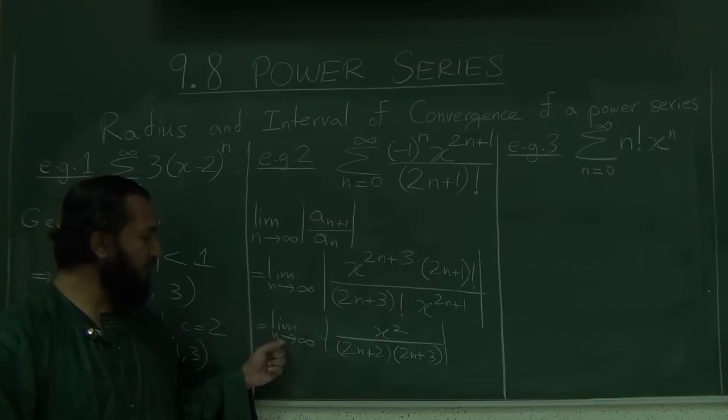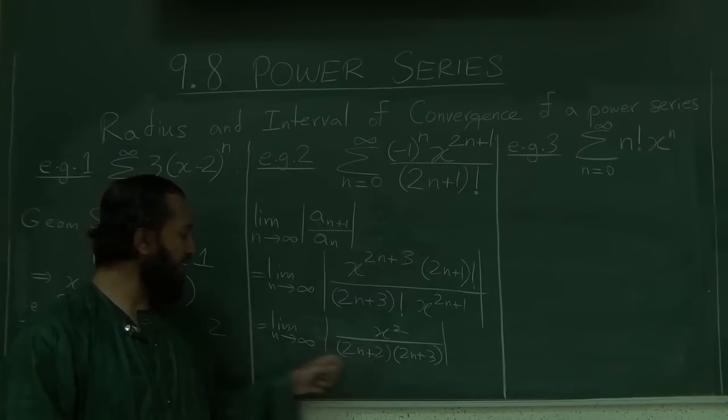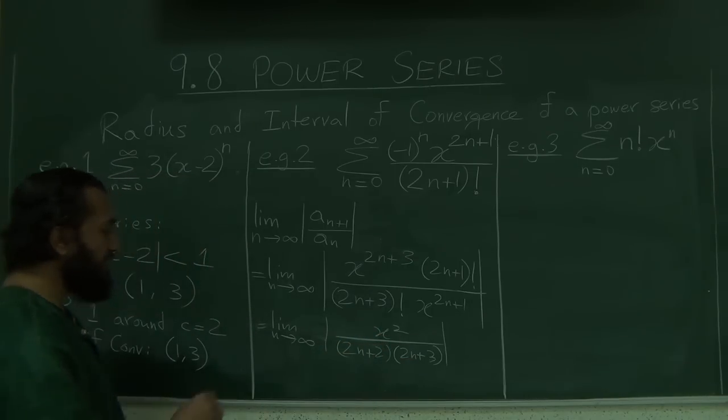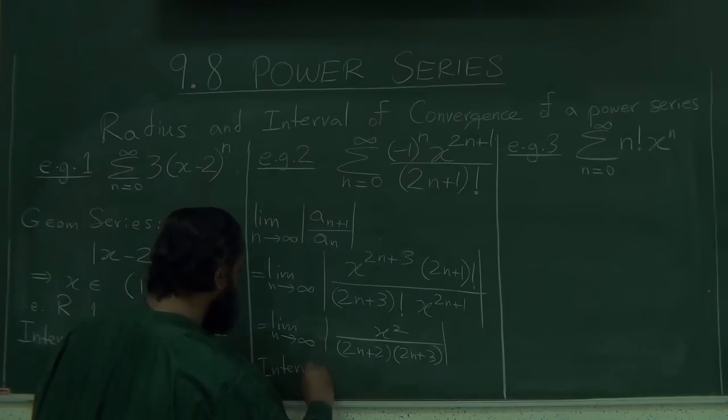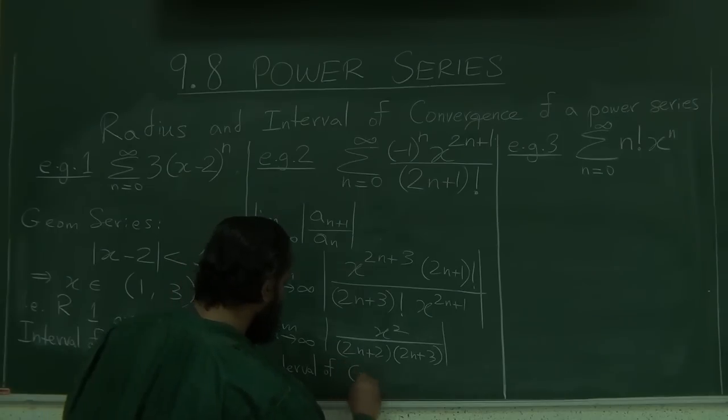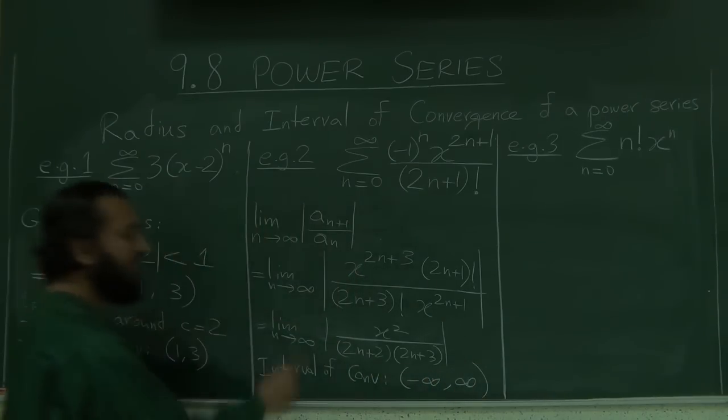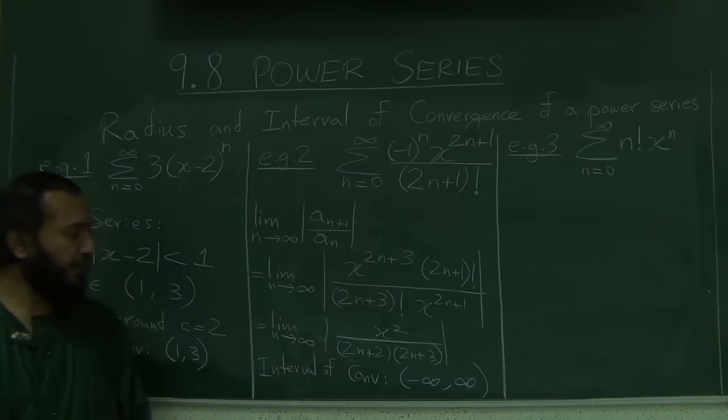So, if you have, for example, here, 5 squared, or even 500 squared, n goes to infinity, this is going to get so big that it's going to make this whole thing go to 0. So what do you think is the interval of convergence? It's the whole number line. Any x value you can put here, this limit will still go to 0.